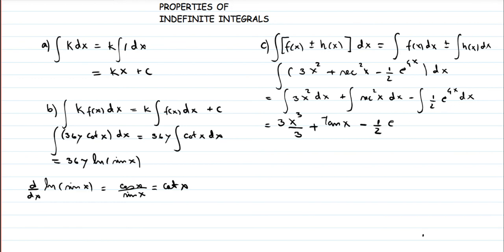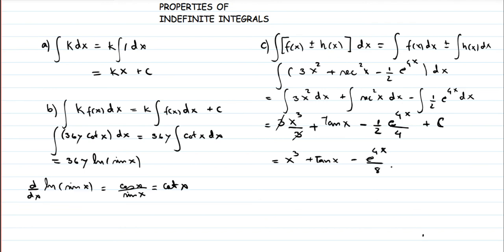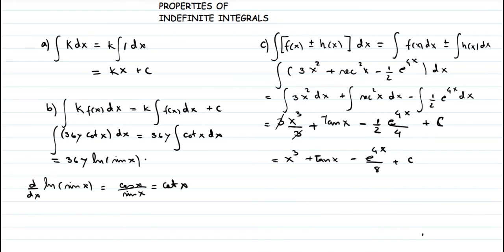For the exponential term, we apply the exponential rule: the integral of e^(4x) is e^(4x) divided by 4. With the 1/2 factor, the denominator becomes 8. So the final answer is x³ + tan(x) − e^(4x)/8 + C, where C is the constant of integration for indefinite integrals.